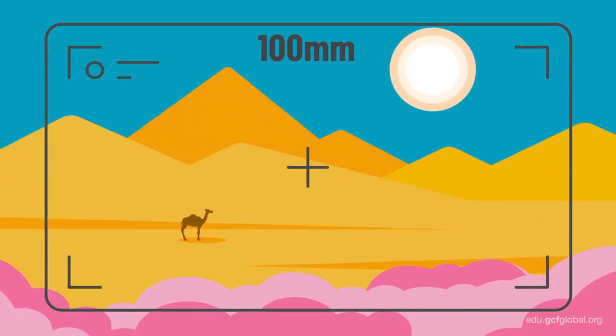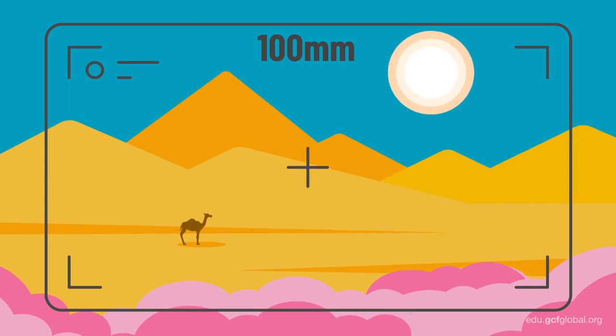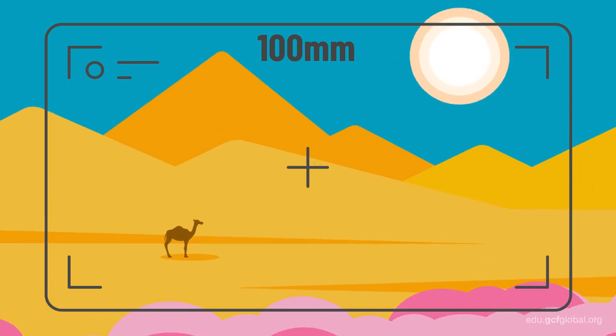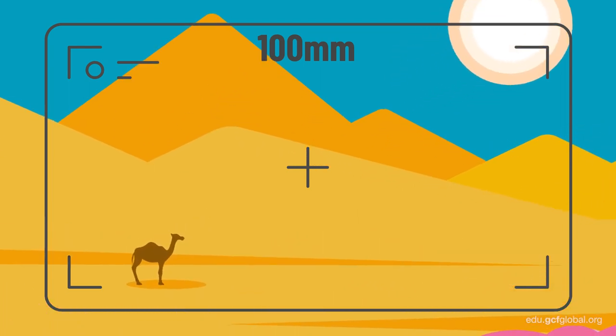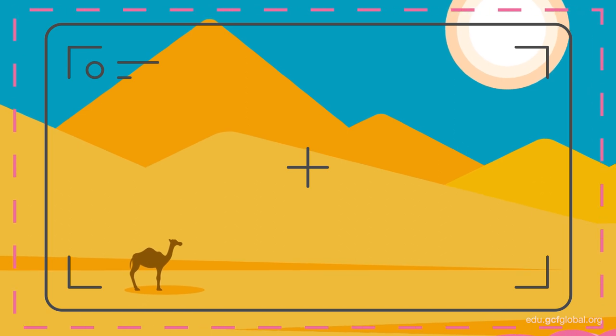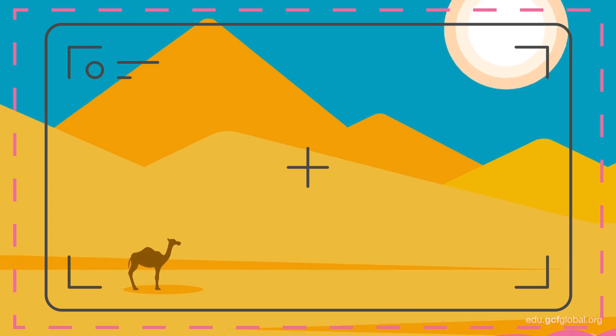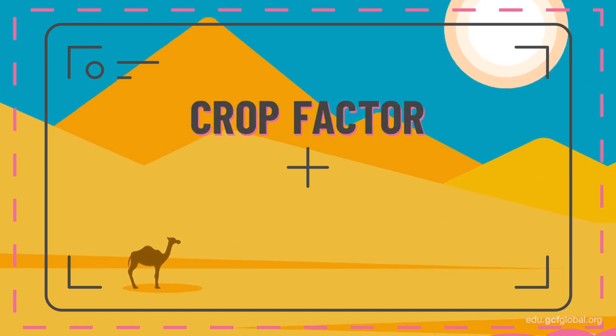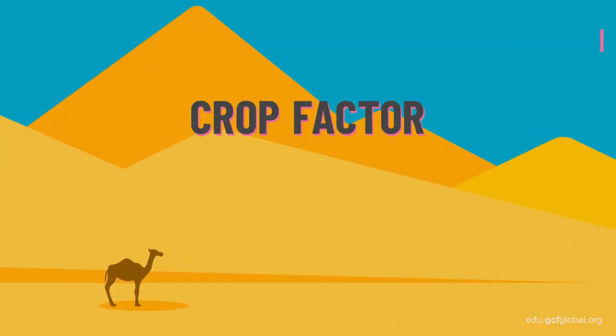Remember, when you have a longer focal length, the viewing angle is reduced. This can also happen depending on the sensor's size, due to something known as the crop factor.